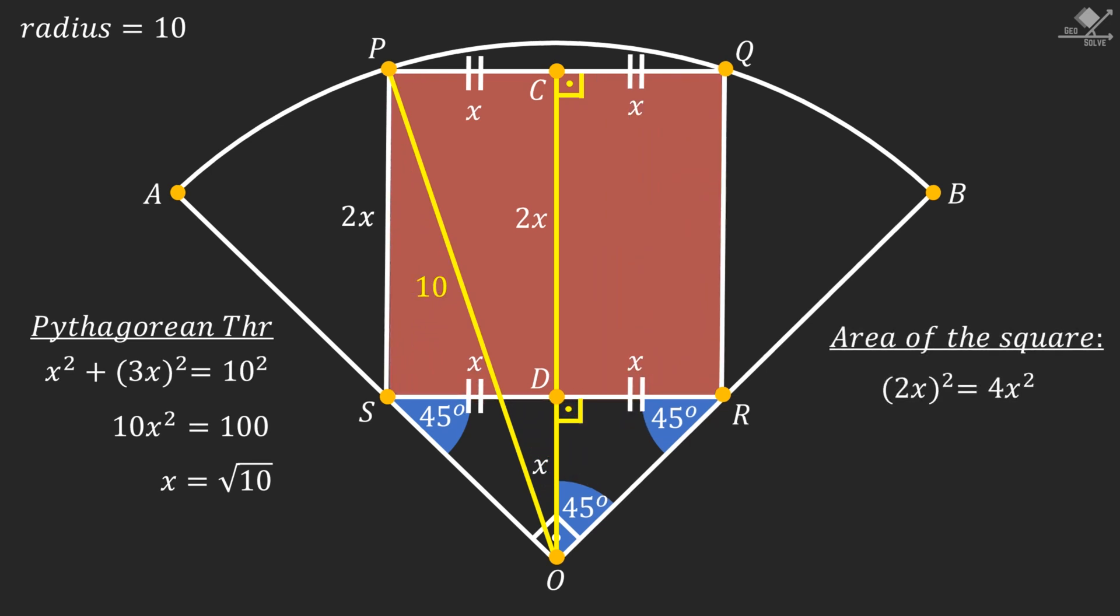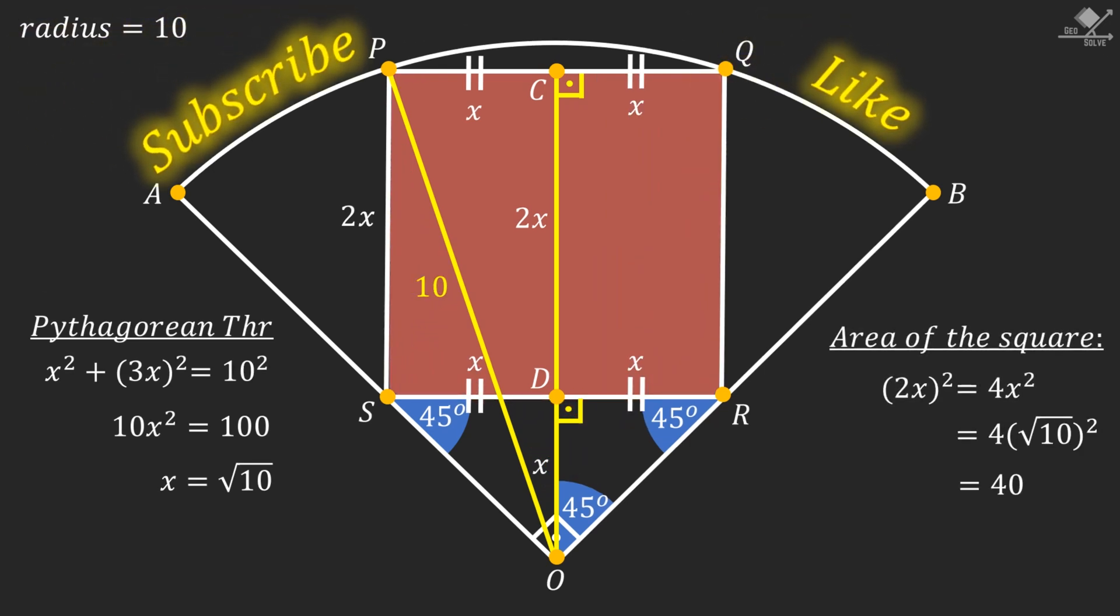We know that the area of the square is 4X squared. And that will be equal to 40 units squared. And that is our answer. I'll see you next time.